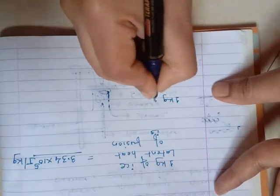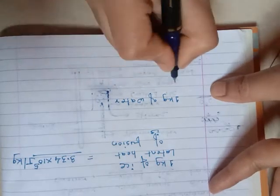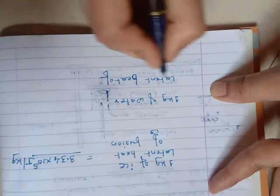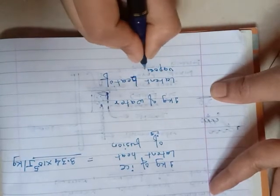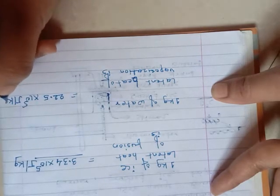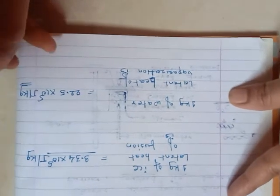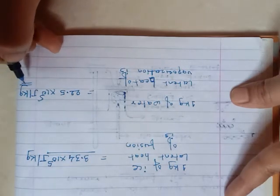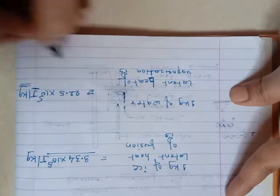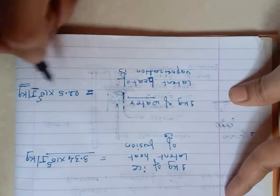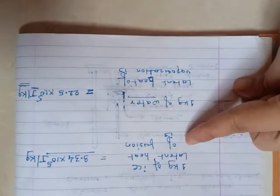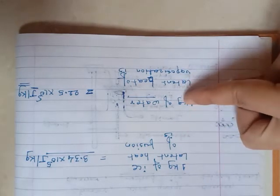If you take 1 kg of water, the latent heat of vaporization is 22.5 × 10⁵ joules per kg. To convert 1 kg of water completely into vapours, it requires 22.5 × 10⁵ joules of energy. This value again varies for various types of liquids — this value is for 1 kg of water. So these are the latent heat values for the solid state and liquid state of water.